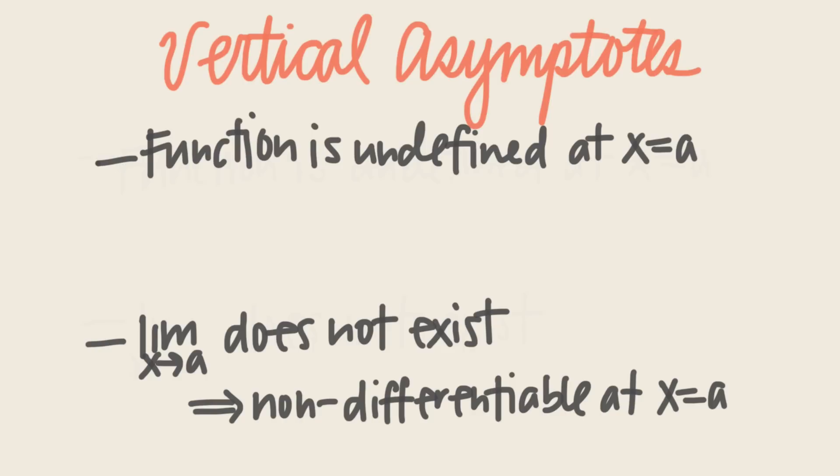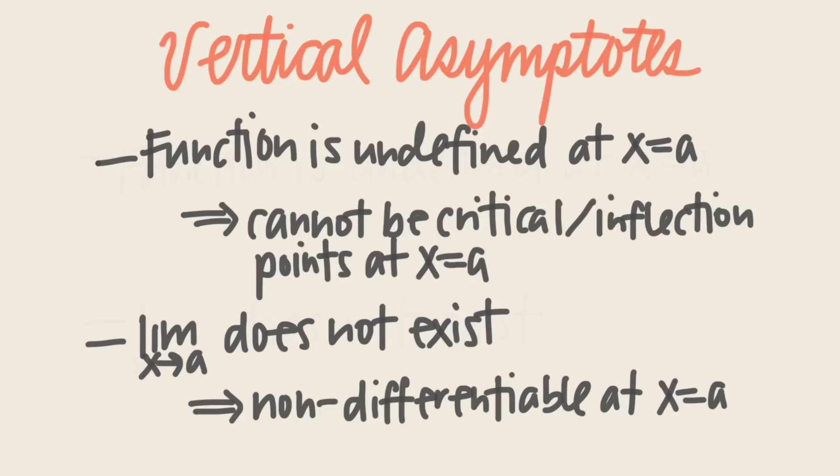In the same way, vertical asymptotes also cannot be critical points or inflection points, since one of the basic parameters for these points is to exist on the function. Neither critical points nor inflection points ever occur at a discontinuity.